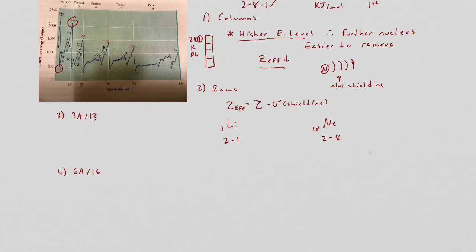You don't want to talk about stable octets here. You want to talk about this in terms of effective nuclear charge. The idea is basically very simple. The nuclear charge is the atomic number. So I'm comparing lithium versus neon. Lithium has a nuclear charge of 3, while neon has a nuclear charge of +10.